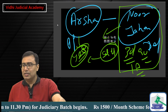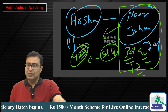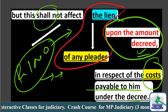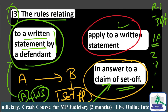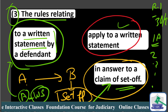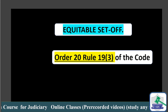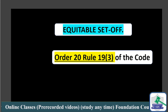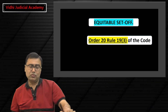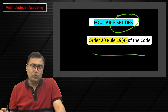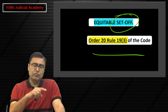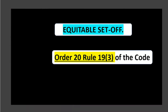I believe the explanation is clear — through the story and the example both. This is Rule 6 complete. The topic of legal set-off is complete. In the next class we will take up equitable set-off, then start the topic of counter claim, and we will also differentiate between set-off and counter claim. Bye bye for today.